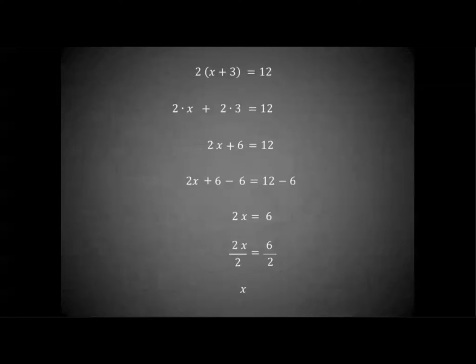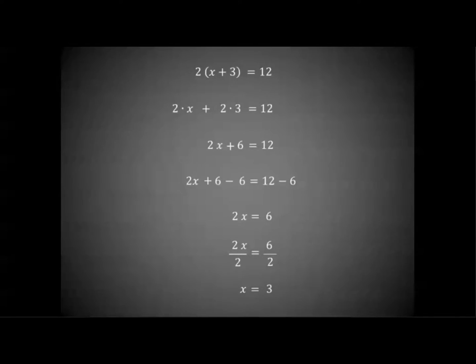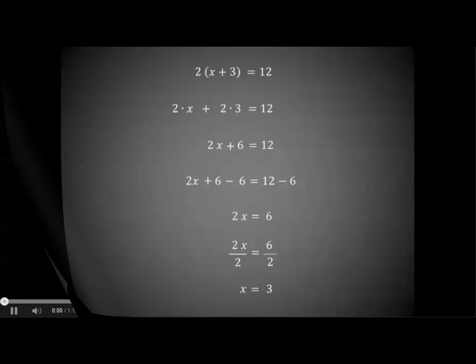We finally have x all alone, equal to 6 divided by 2, or 6 over 2, which is 3, by our facts of numbers.